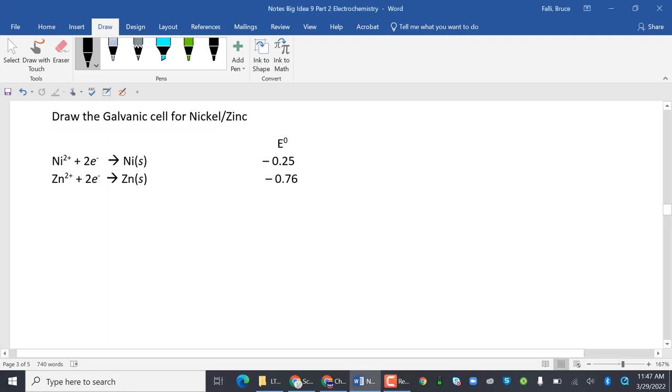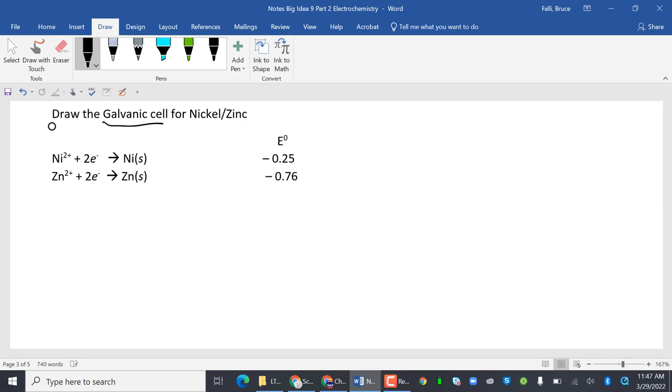So let's do an example of drawing the galvanic cell for nickel zinc. Galvanic means that E has to be positive. Remember, electrolytic means it would have to be negative. So I have to flip one of these.